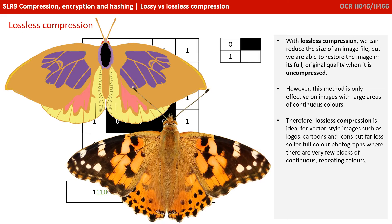Therefore, lossless compression is ideal for any vector-style images — things like cartoons, logos and icons — but it becomes far less effective for full-colour photographs where there are very few blocks of continuous repeating colour.